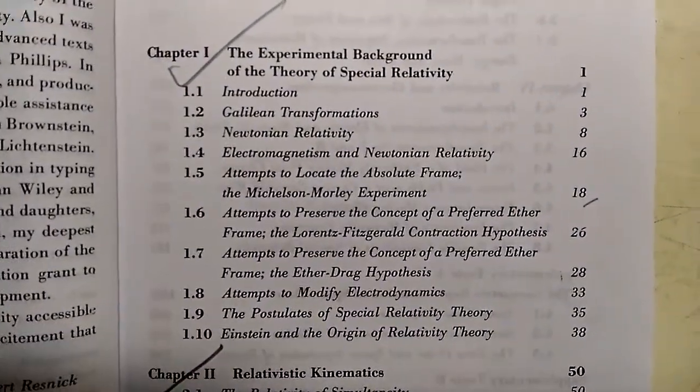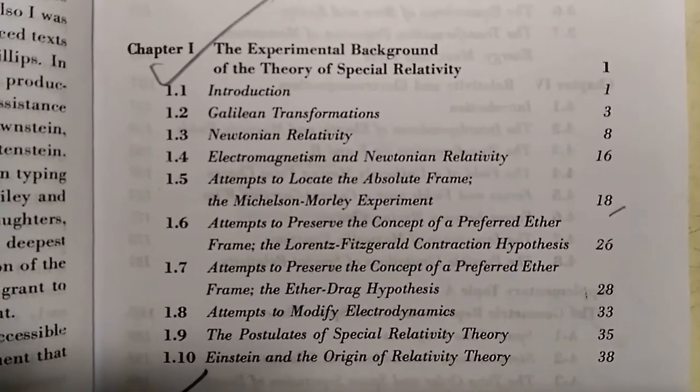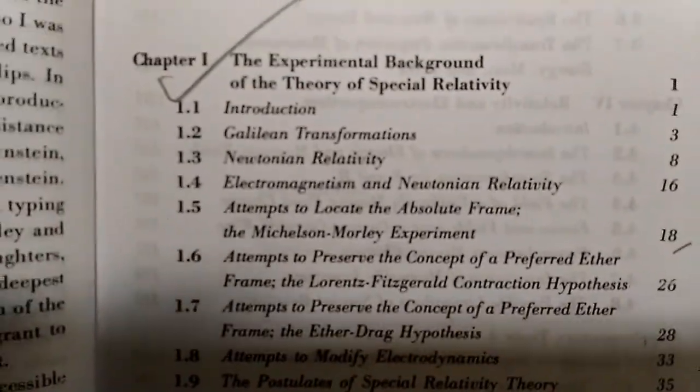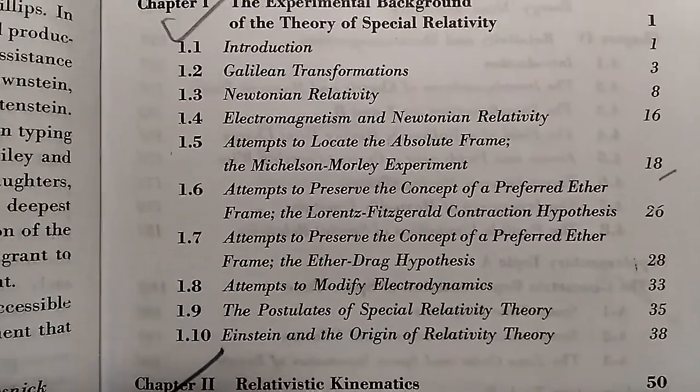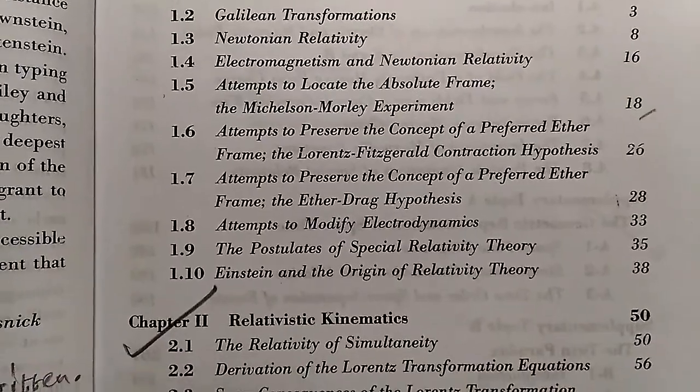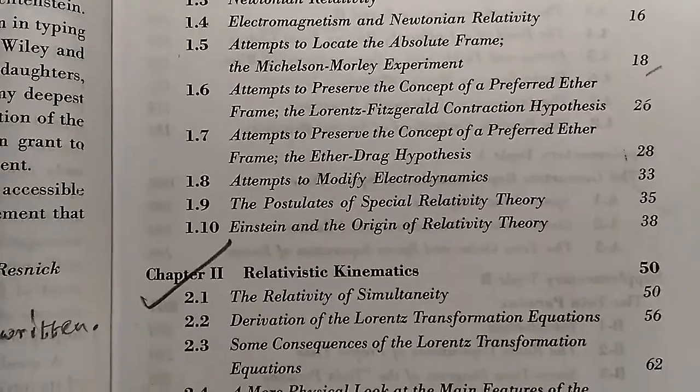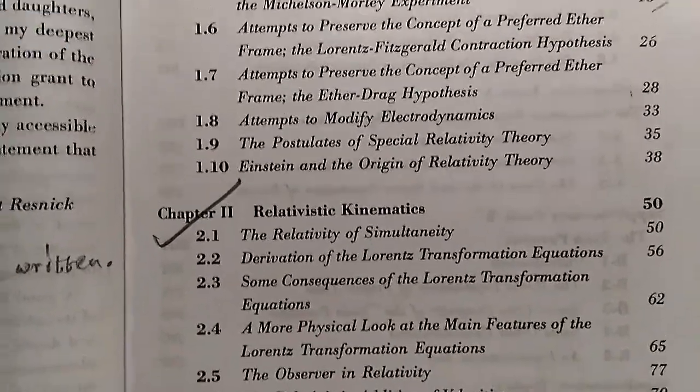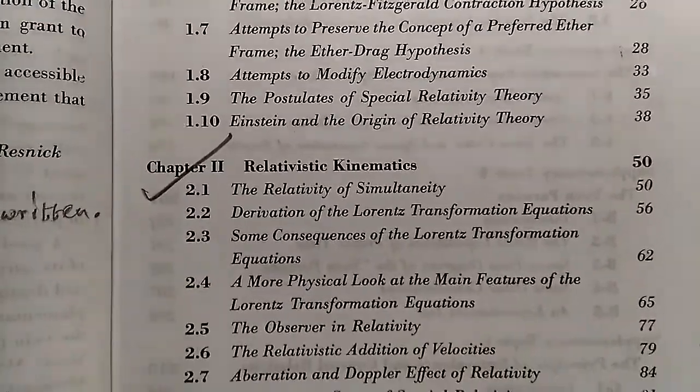The first chapter is the experimental background of the theory of special relativity and it contains Galilean transformation, Newtonian relativity, then electromagnetism and Newtonian relativity, then Michelson-Morley experiment, Lorentz-FitzGerald contraction hypothesis, the ether-drag hypothesis, modification of electrodynamics, then the postulates of relativity and then Einstein about some concept of relativity and the origin of it.